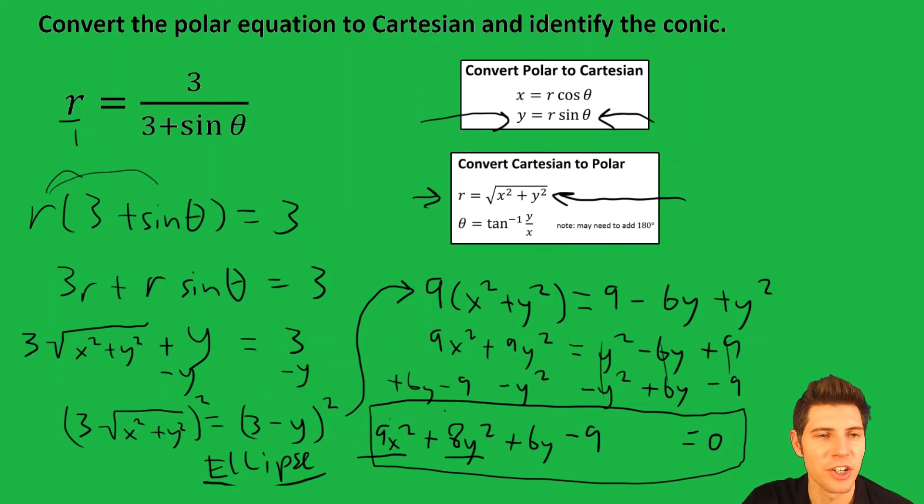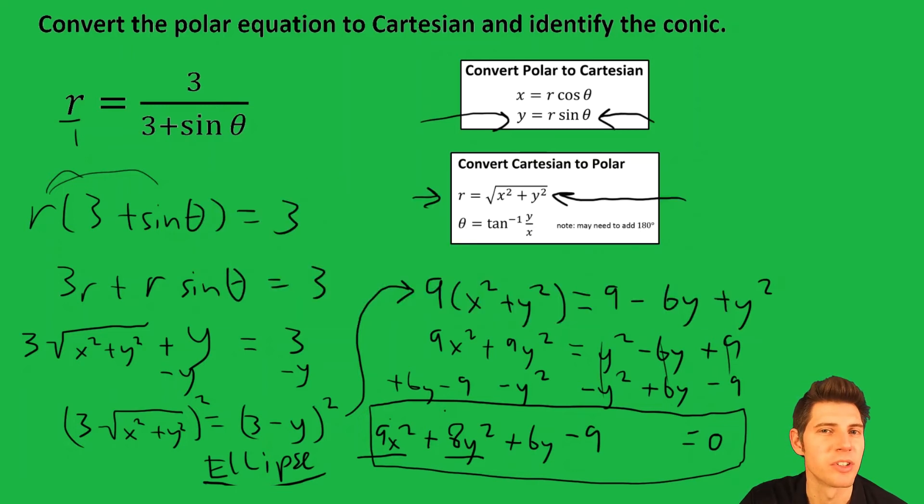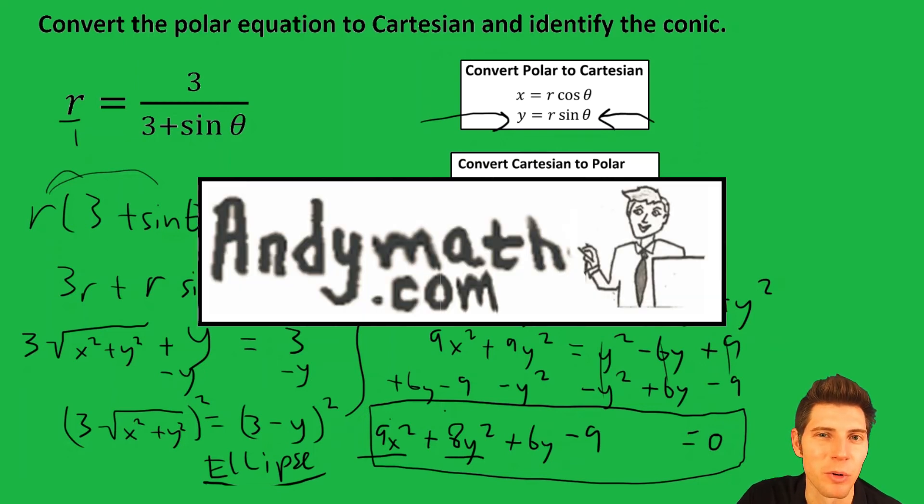So we converted it to Cartesian, put it in standard form, and then we identified it as an ellipse. If you're not sure why that's an ellipse, I have a whole study guide of conic sections at andymath.com you can check out. I hope this all made sense. Please like and subscribe. Check out andymath.com for even more videos and study guides, and I'll talk to you guys soon. Bye.